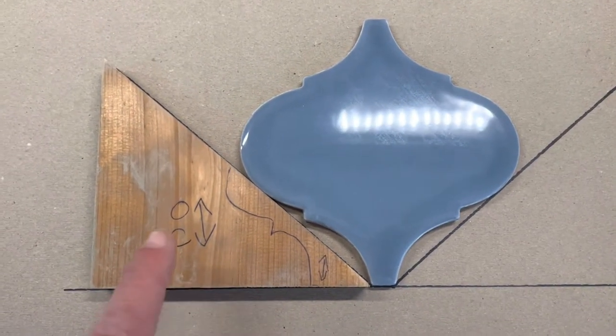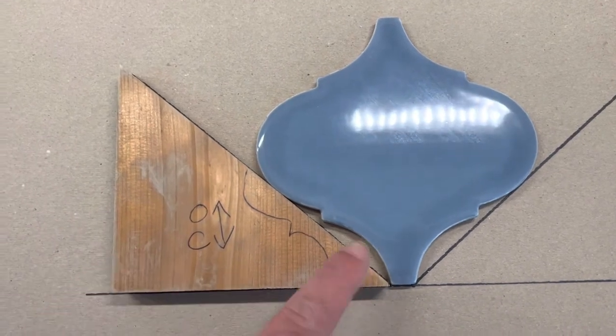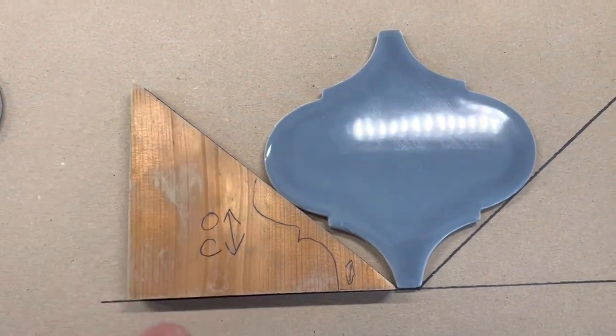Once you've done that, you can cut a piece of wood that matches that angle. In this case, it's 42 degrees, 90, 48.